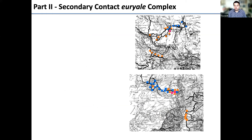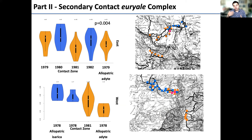Going back to the natural history museum to examine the original publication's samples, we found the original author collected over multiple years but never separated them by year. When we did, we found the same phenotypic shifts between even and odd years — shifting from more isarica-like to more adita-like phenotypes — at both contact zones.